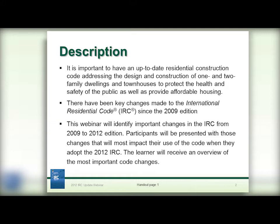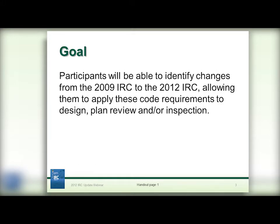It's important to have an up-to-date Residential Construction Code addressing the design and construction of one and two family dwellings and townhouses to protect the health and safety of the public, as well as provide affordable housing. There have been some key changes made to the International Residential Code since the 2009 edition. This webinar will identify important changes in the IRC from 2009 to 2012 edition. Participants will be presented with those changes that will most impact the use of their code when they adopt the 2012 IRC.